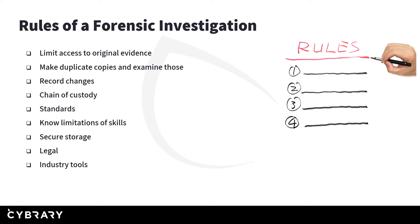Some of the rules of forensic investigation — not in any particular order and not a full list: first, limit access to the original evidence by making duplicate copies and examining those. Also maintain the chain of custody, because not everyone needs to touch the evidence. In court you'll have to prove who touched it and why — what was their legitimate reason for interacting with the evidence.